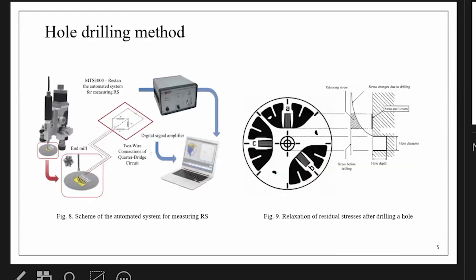A little bit more about the hole drilling method. The essence of this method is we install the strain gauge with three measurement grids on the surface of the material. Then at the center of this gauge, a hole with a diameter of 2 millimeters is drilled.